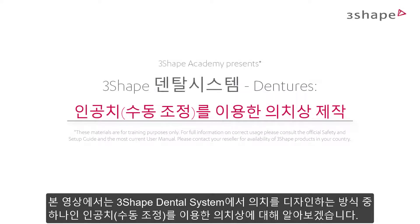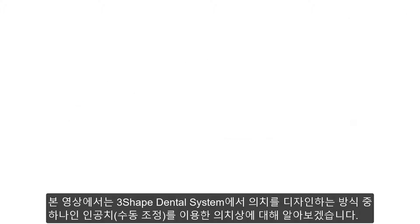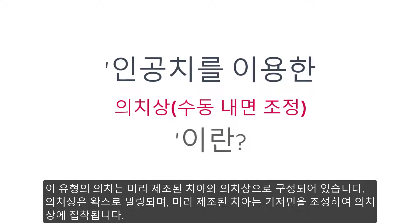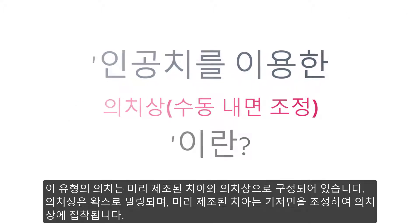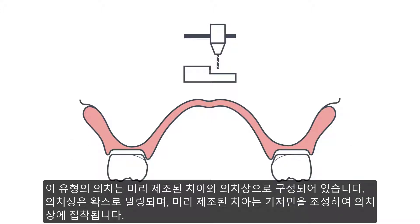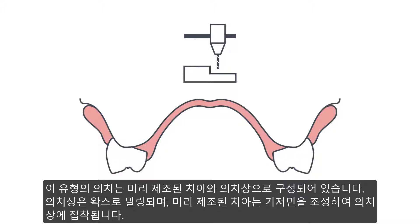In this video, we will introduce you to the base with artificial teeth, manual reduction, which is one of the assembling types when designing dentures in the 3-shaped dental system. This is a type of denture that consists of a base with pre-manufactured teeth. The base is milled from wax, and the pre-manufactured teeth are glued into the denture base after manual adaptation of the teeth's basal surfaces.